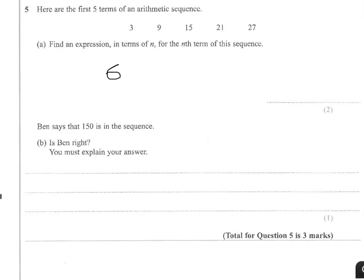That forms the first part of the expression. The second part of the expression can be found by working out what you need to do to 6n, if you make n equal to 1, and you want to get your first term of 3.